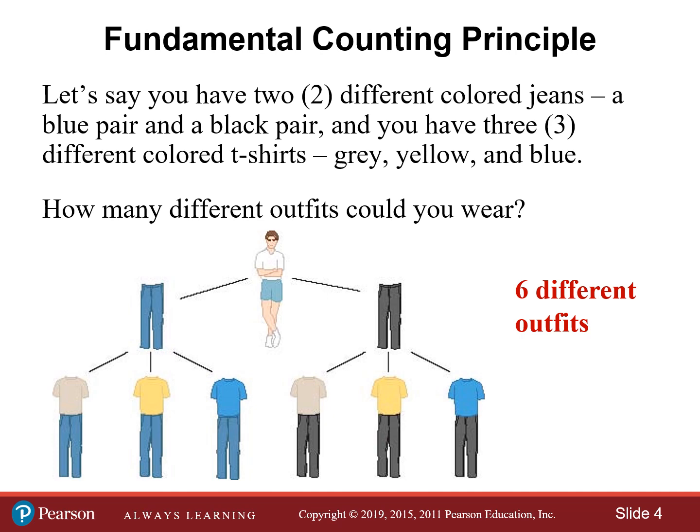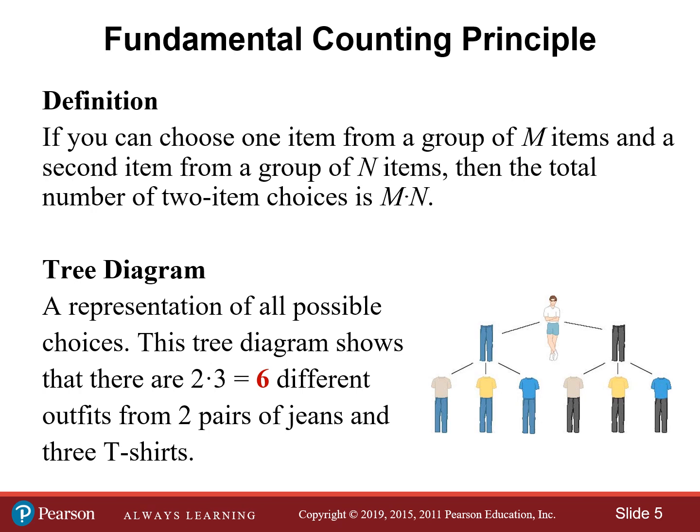Instead of having to draw a picture each and every time, you can use the Fundamental Counting Principle, which says: if you can choose one item from a group of M items and a second item from a group of N items, then the total number of two-item choices is simply their product M times N. The tree diagram shows that there are two times three, or six different outfits, created from two pairs of jeans and three t-shirts.